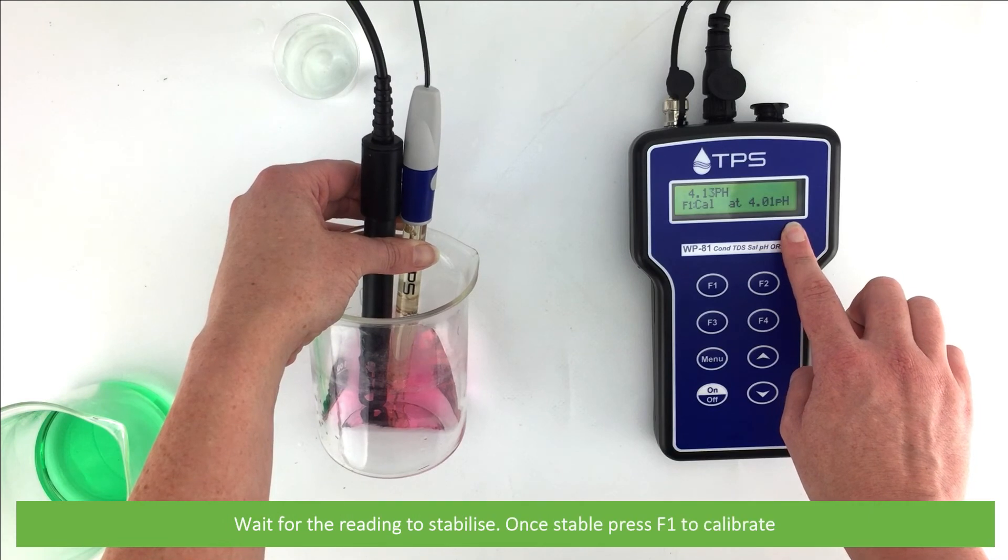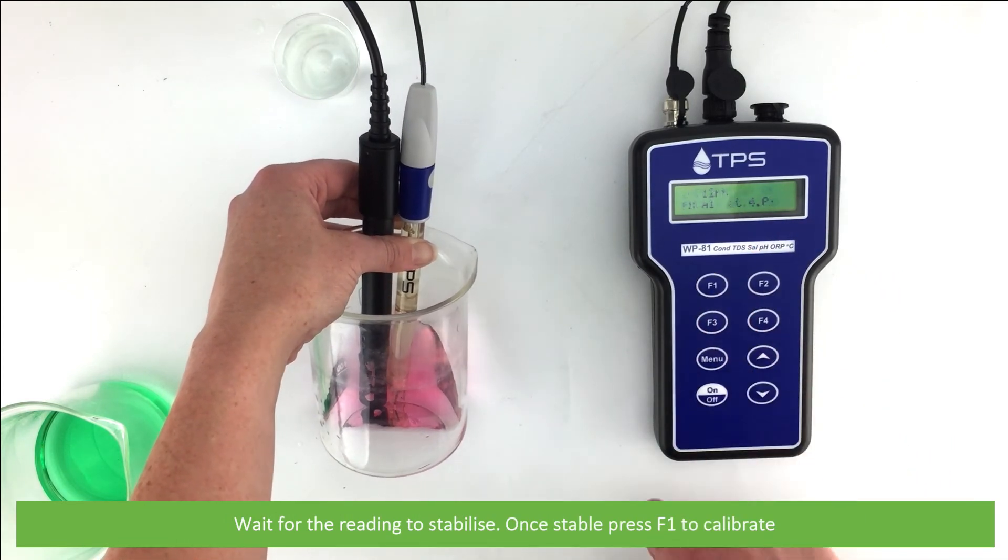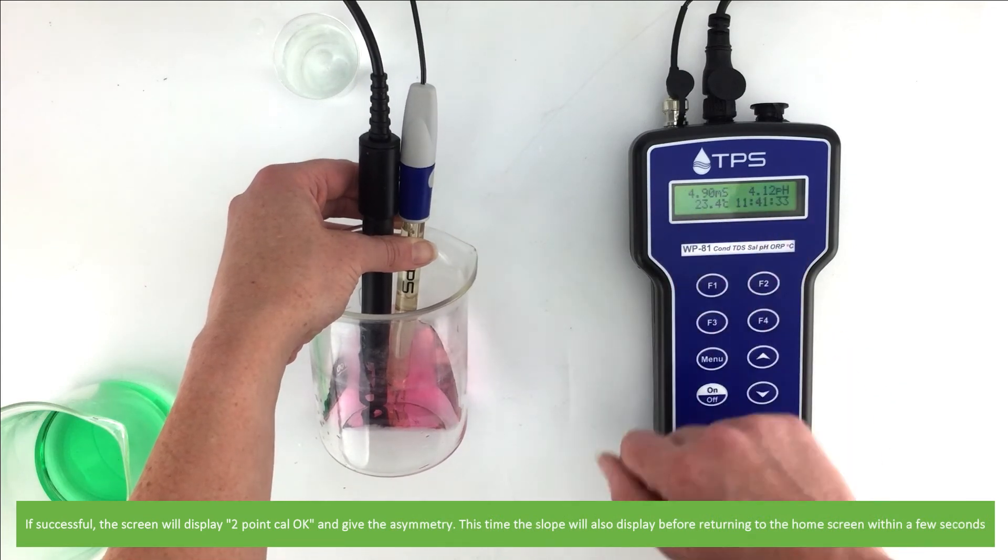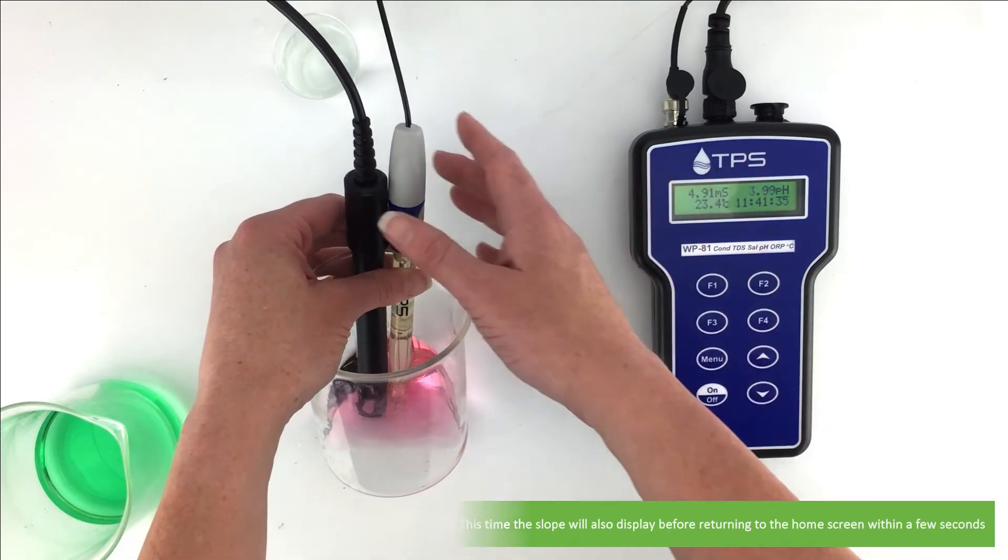Wait for the reading to stabilize. Once stable, press F1 to calibrate. If successful, the screen will display 2.Cal OK and give the asymmetry. This time the slope will also display before returning to the home screen within a few seconds.